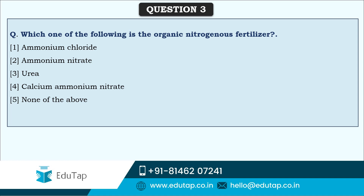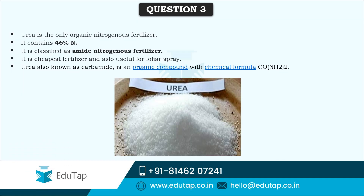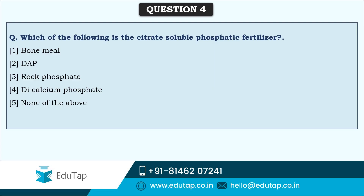The next question asks: which of the following is an organic nitrogenous fertilizer? Almost all nitrogenous fertilizers on the market are inorganic in nature, except urea. Urea is an organic nitrogen fertilizer containing 46% nitrogen and is classified as an amide nitrogenous fertilizer because the nitrogen is in amide form — CO(NH2)2. It is one of the cheapest sources of nitrogen and can even be used as foliar spray. Urea is also known as carbamide.